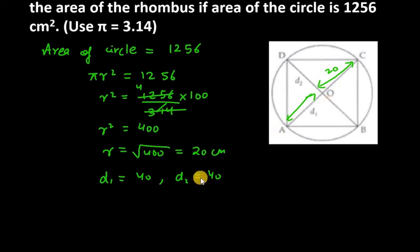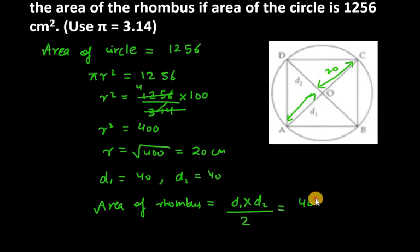Now, we have to find the area of the rhombus. So, rhombus area is the product of diagonals D₁ times D₂ over 2. So, it will be 40 times 40 over 2. You can reduce this. You will get 40 times 20 as 800.